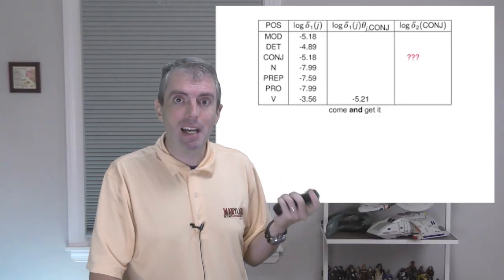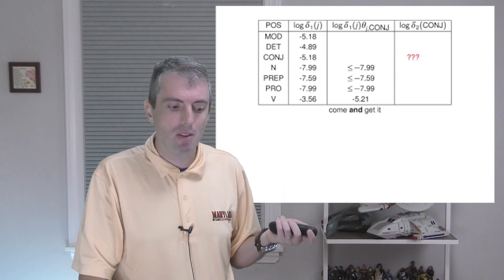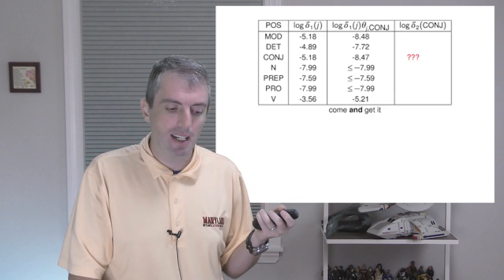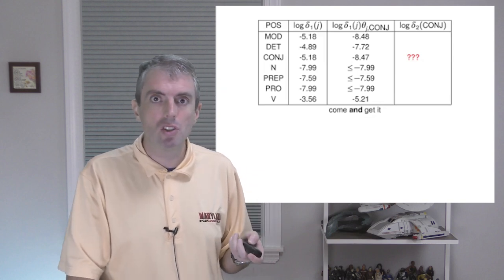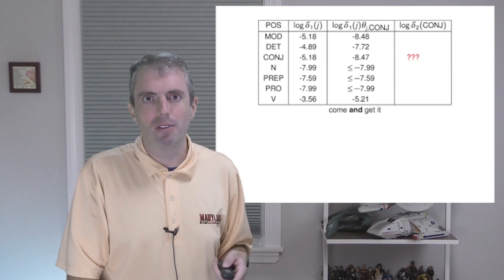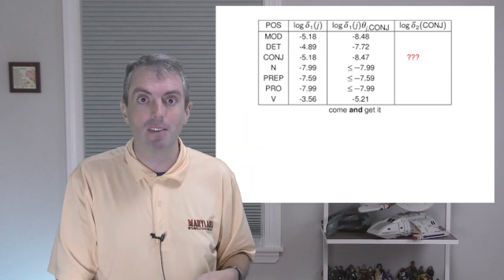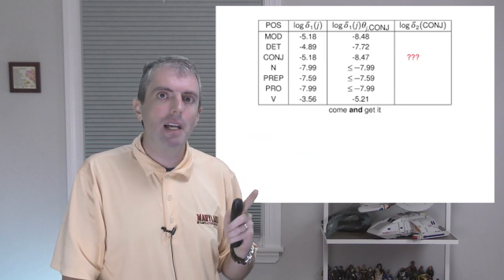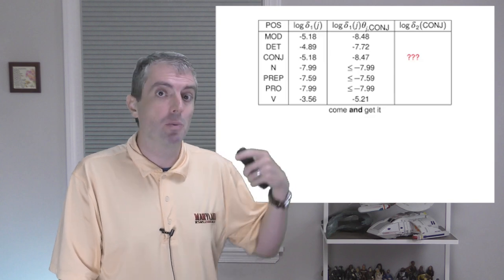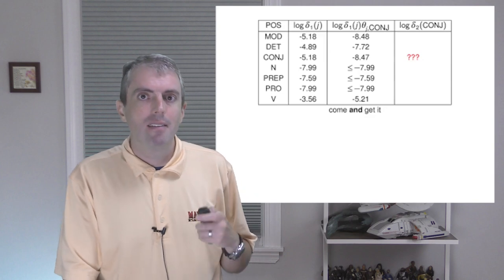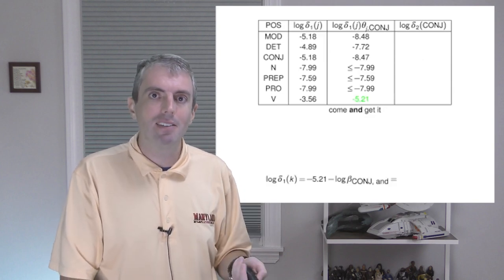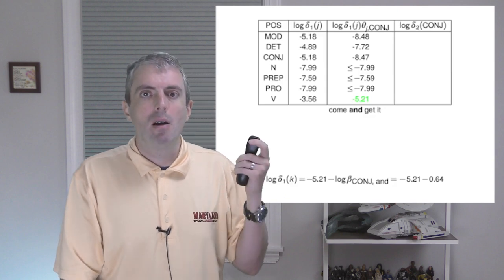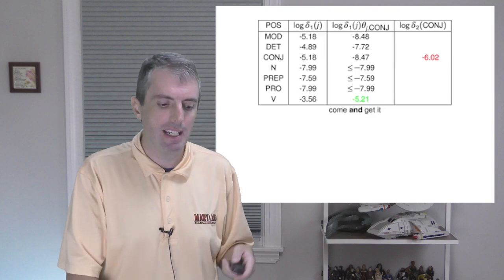We add those things together to get negative 5.21. Once we've done that, we see that we don't even need to bother with the pronoun, the preposition, or the noun, because that's always going to be less than negative 7.99. However, we do need to compute it for the other parts of speech, but we still don't get anything higher than negative 5.21. Thus, the best way of getting to time two in the conjunction part of speech is coming from the verb. But we're still not done for filling out this cell. We need to multiply the probability that we got there by the probability of observing and given that we're in the conjunction state. Since we're working in log space, that's actually an addition. And that gives us negative 5.21 plus negative 0.81, a final score for the conjunction part-of-speech tag at time two.